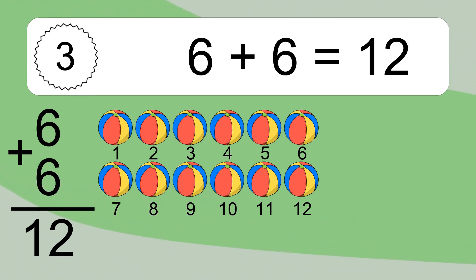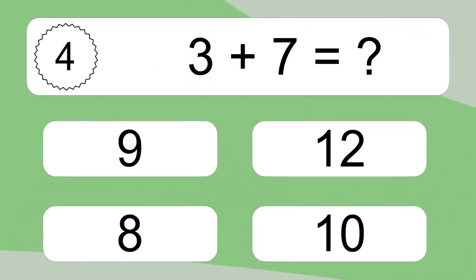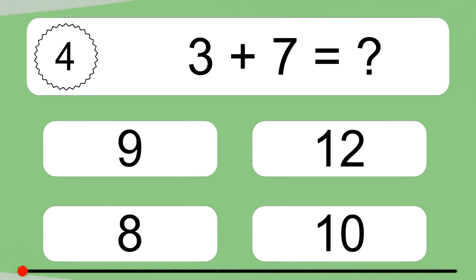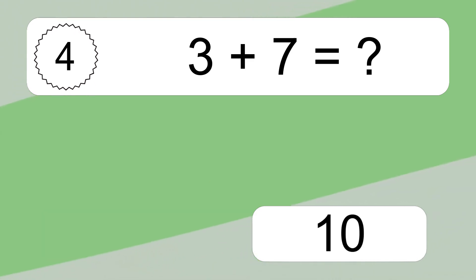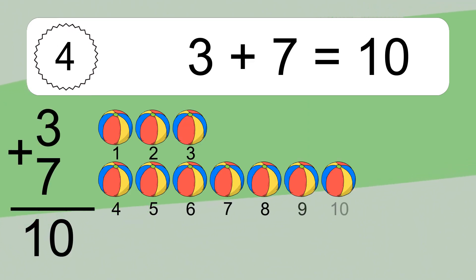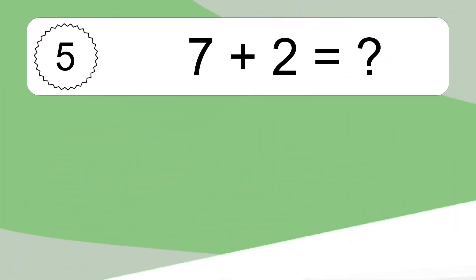Three plus seven equals what? Three plus seven equals ten. Let's count it: one, two, three, four, five, six, seven, eight, nine, ten.